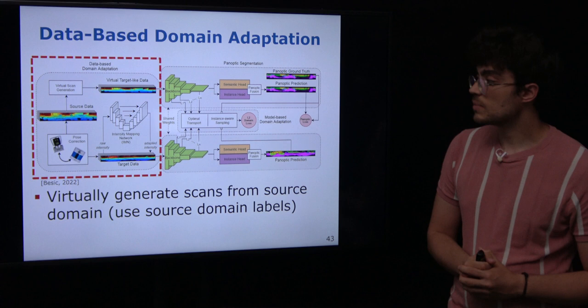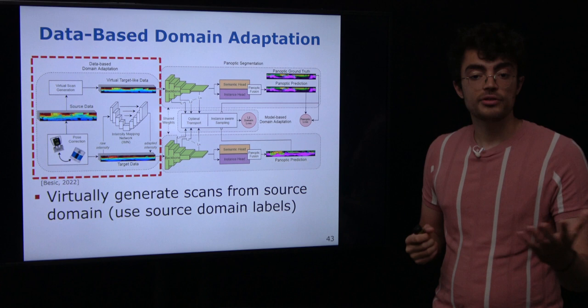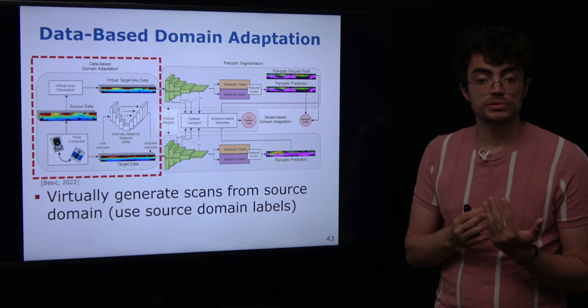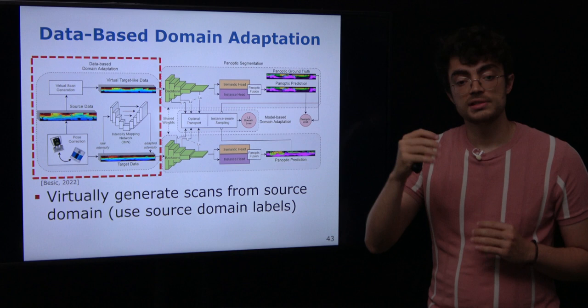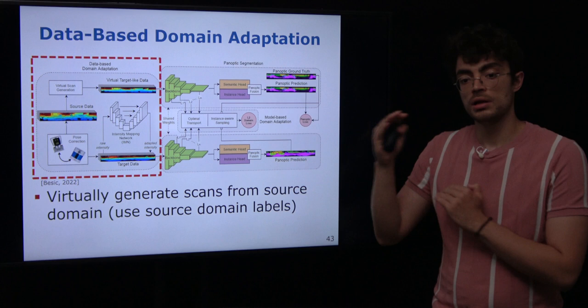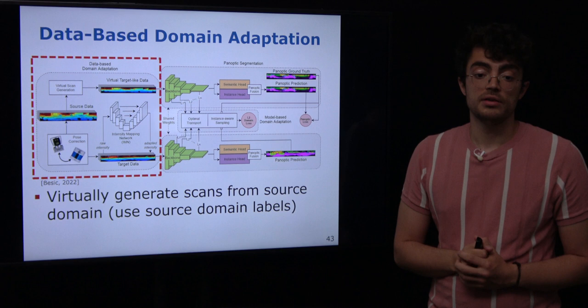One way to tackle domain shift is in a data-based way. Given our source domain with its labels, we virtually generate scans from the target domain. In the Semantic KITTI and nuScenes example, we try to generate virtual scans from Semantic KITTI that have fewer bins to match the resolution of nuScenes — for example, by skipping some bins. Since we have the labels for the source domain, we use the same labels on the virtually generated scans and train on both the original dataset and the virtually generated scans.